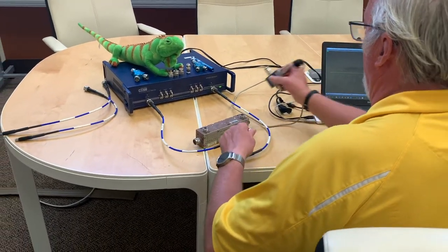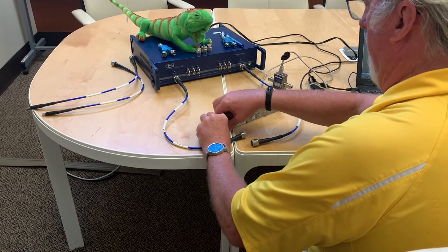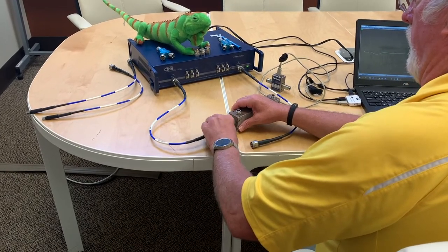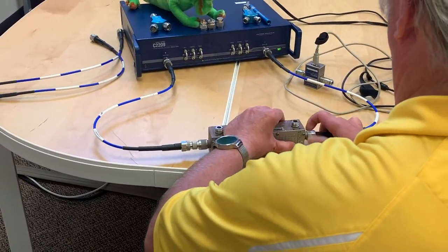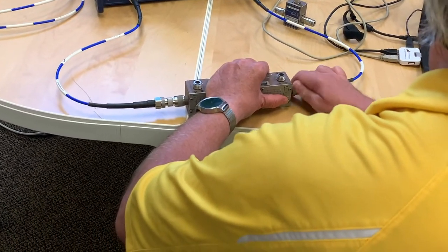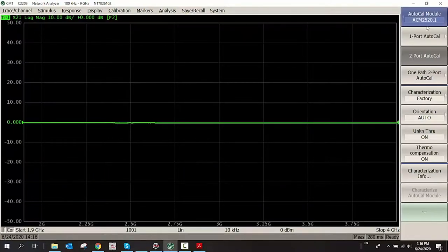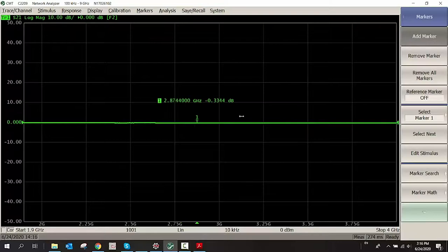Now I want to measure the insertion loss of this coupler because I want to know everything about it before I start using it. Of course, I'm adding the insertion loss of an adapter there, but I don't have much choice. So the return loss looks pretty good. Let's look at the insertion loss. Add a marker. So it looks like the loss here is about 0.3 something dB. So it's not bad insertion loss at all.